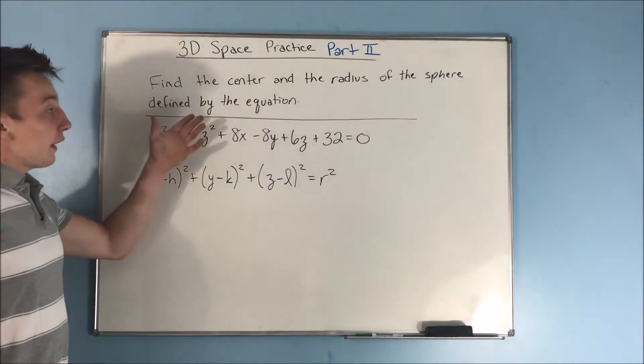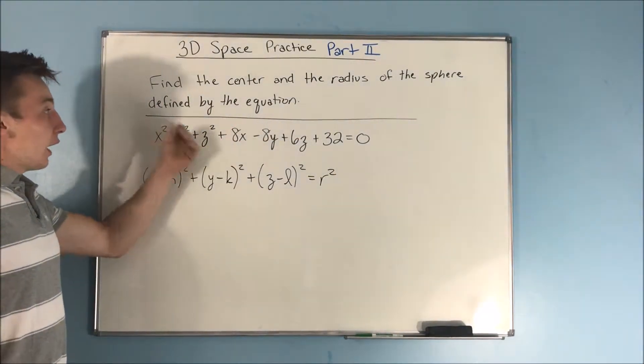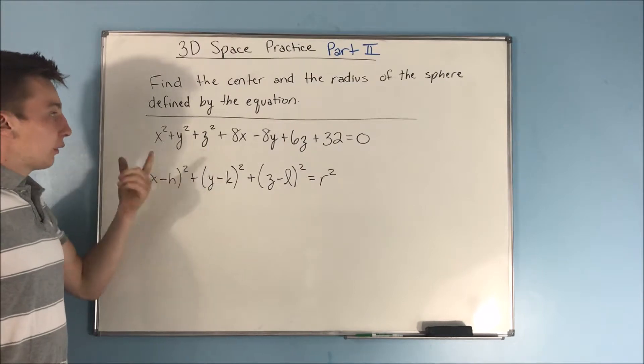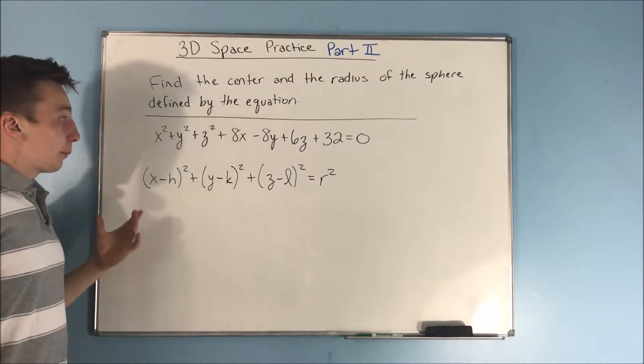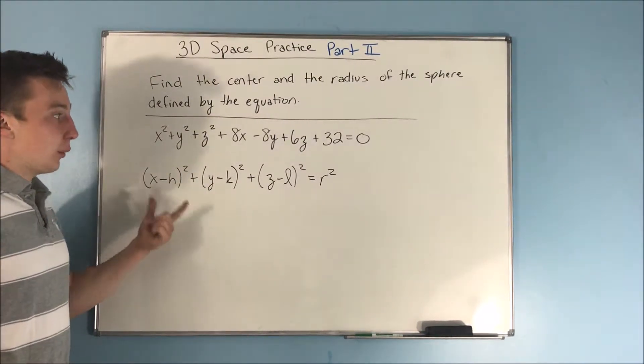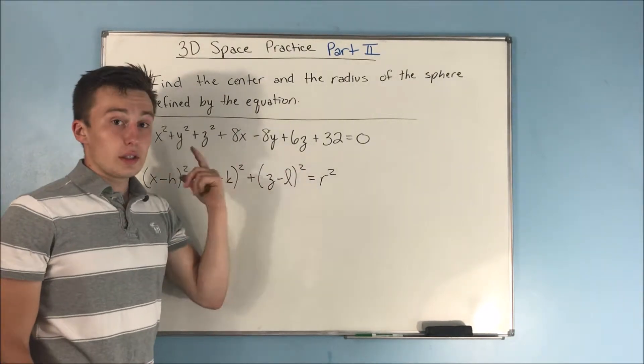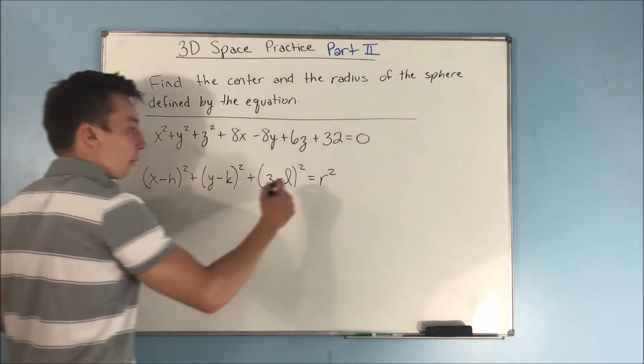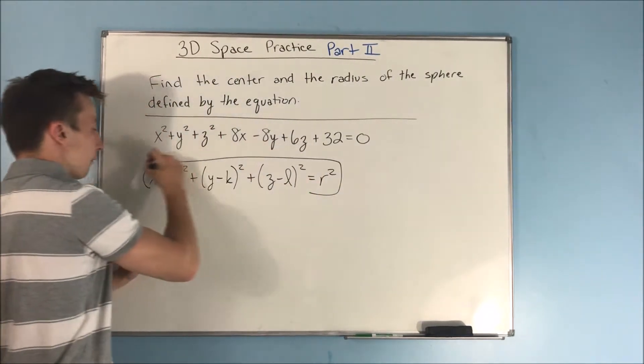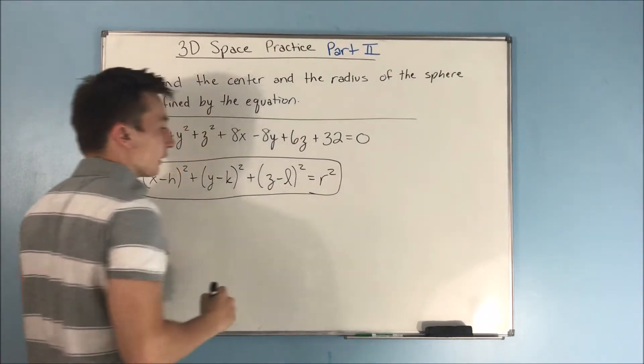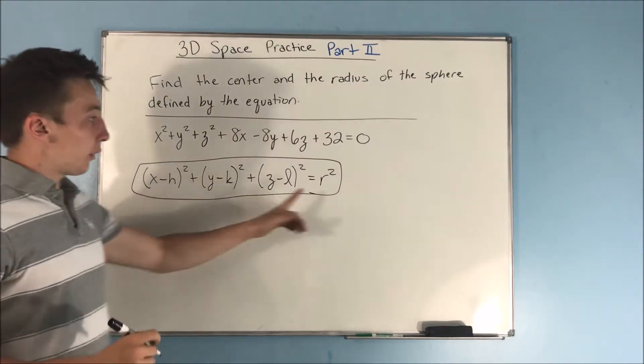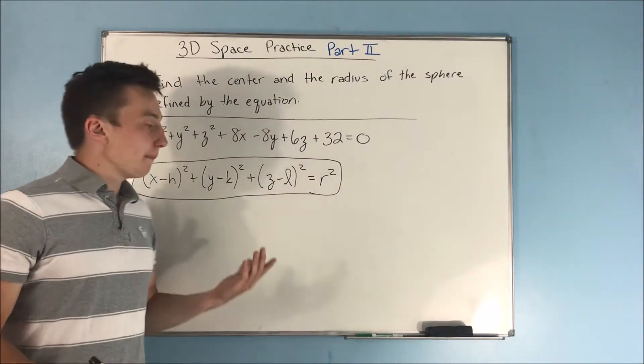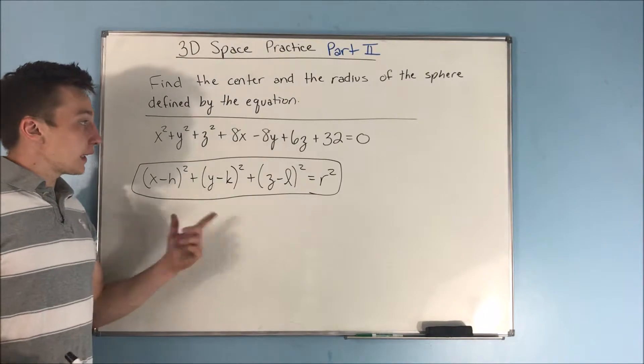All right, so now, we want to find the center and the radius of the sphere defined by this equation. And that's x²+y²+z²+8x-8y+6z+32=0. And here is kind of what we want to get that into. This is the form that's going to give us the center and it's going to give us the radius. So we need to get it into this form. How do we do that? Well, we're just going to complete the square here.